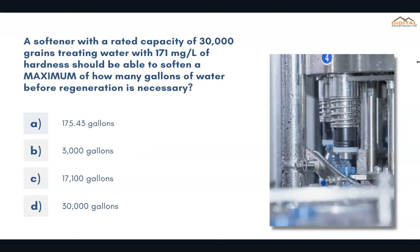A softener with a rated capacity of 30,000 grains treating water with 171 milligrams per liter of hardness should be able to soften a maximum of how many gallons of water before regeneration is necessary? The correct answer is B, 3,000 gallons.